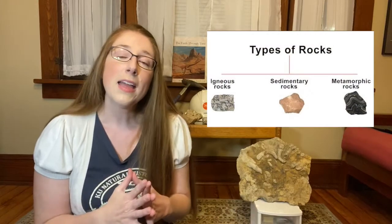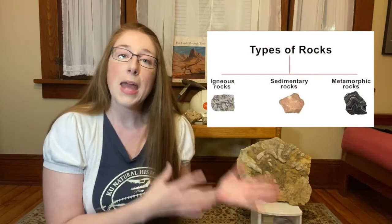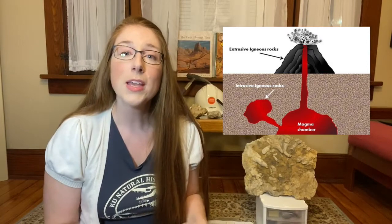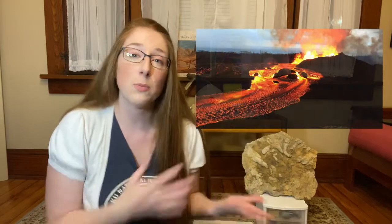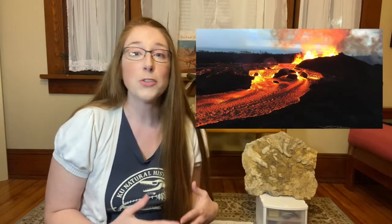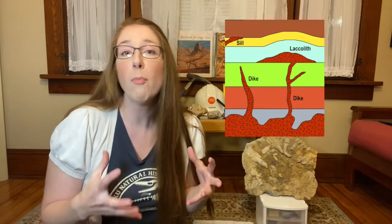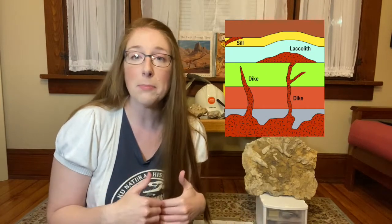So first let's talk about rocks. There are three broad types of rocks and those are igneous, sedimentary, and metamorphic. Igneous rocks form as molten magma from inside the earth cools. You can have igneous rocks forming when magma reaches the earth's surface — at which point we call it lava — like during a volcanic eruption or at a mid-ocean ridge on the ocean floor.